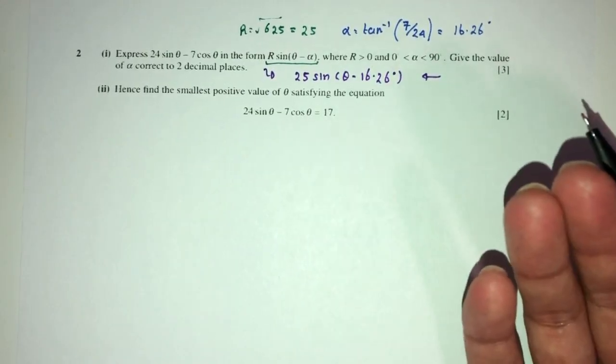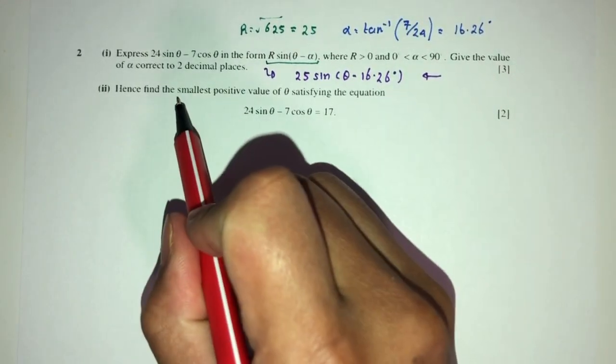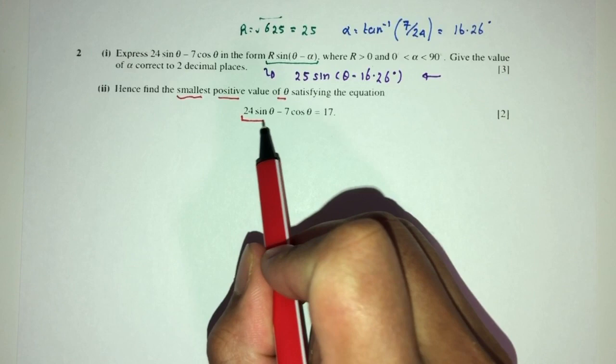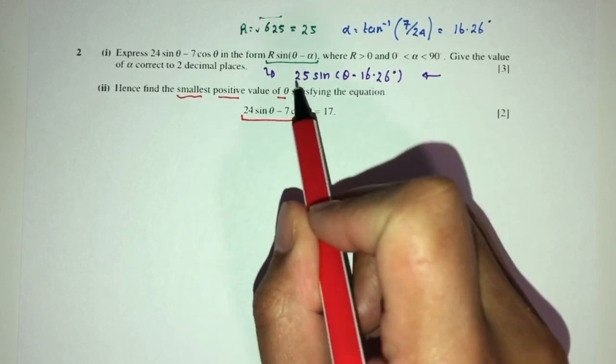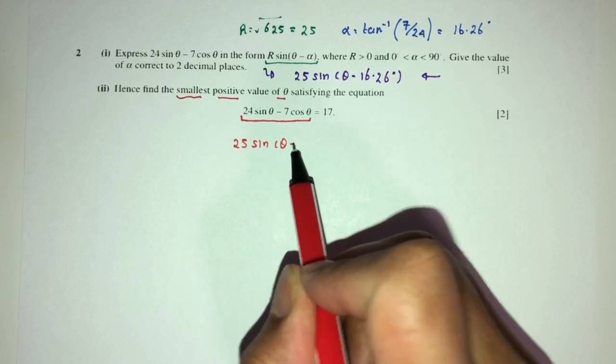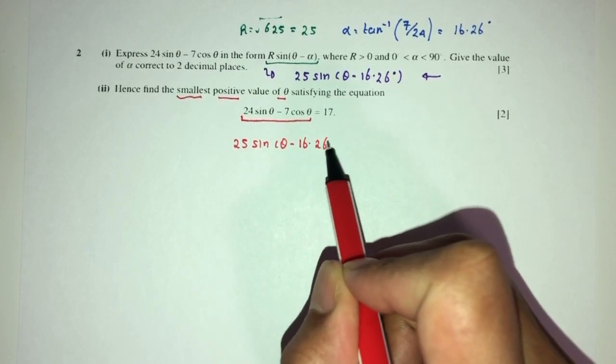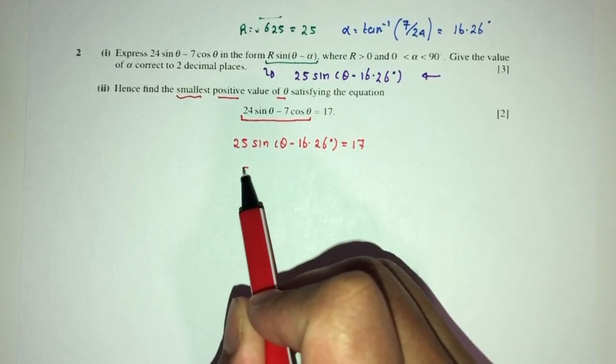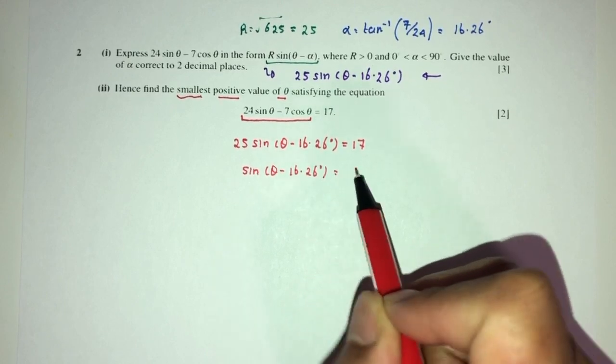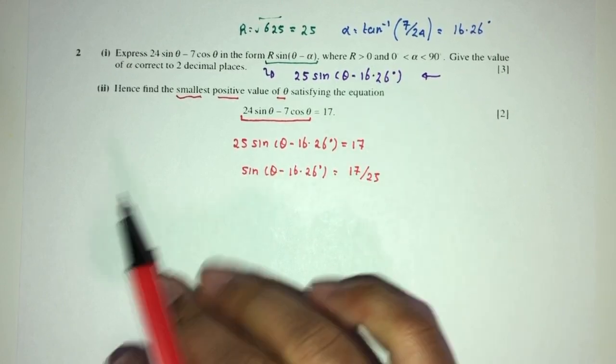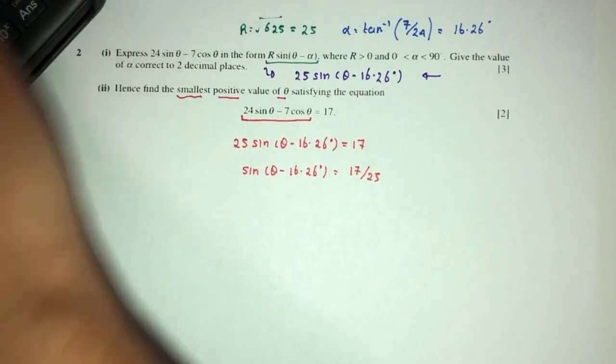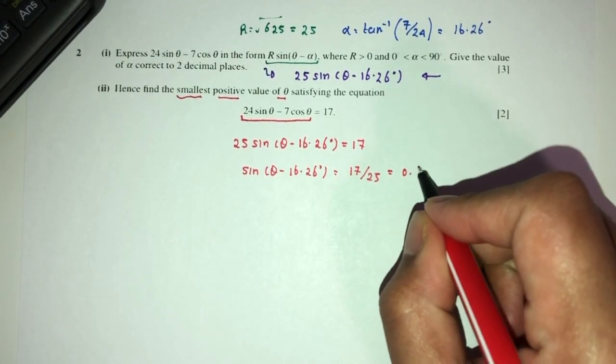Now for part 2, hence, using that value, find the smallest positive value of θ satisfying this equation. So you can see, this one we have shown become this one. So let's replace. This will be equal to this one right now. Here we go. Equal to 17. Obviously, make sine become subject. So sine of the angle over here will be my subject. And this will be divided by 25. So what is 17 divided by 25 is 0.68.